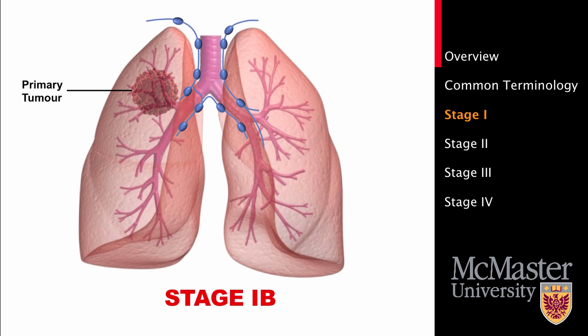The second type of stage 1 lung cancer is stage 1b. This is where the tumor is greater than 3 cm. The lung cancer still cannot be found in any lymph nodes and there is no metastasis. Surgery is the treatment of choice for stage 1 lung cancer; however, other major treatments are available.